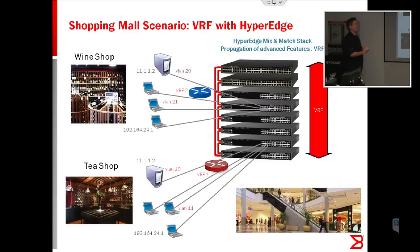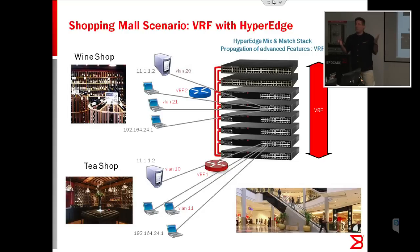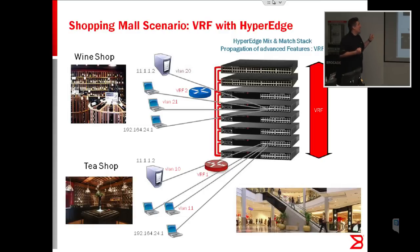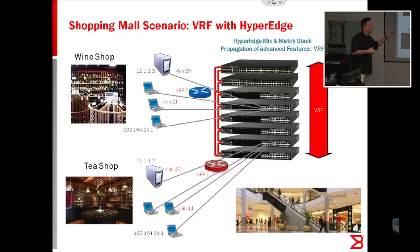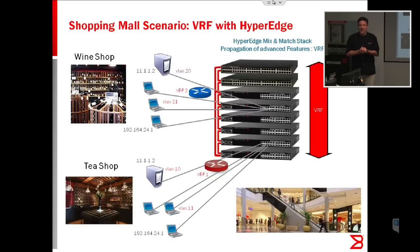Here we have a shopping mall scenario where the network admin is offering connectivity for each store, but you obviously want the stores to be completely isolated from a traffic perspective. You don't want the Microsoft store connecting to the Apple store in the same mall. Per store, we created two VLANs — one for the shop floor to connect all the equipment and laptops, and one for the basement to connect the servers. Each shop has a set of laptops and a set of servers.